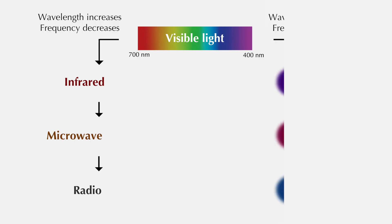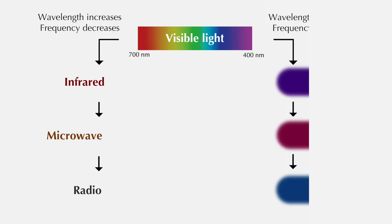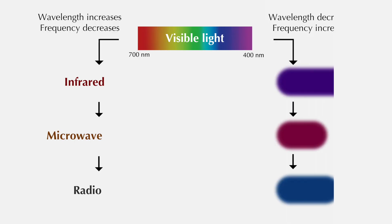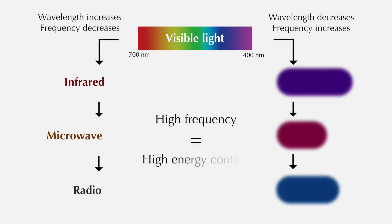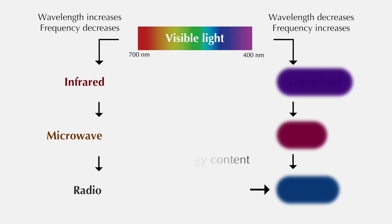We can now shift to the other half of the spectrum, where the frequency of radiation is higher than visible light. As a reminder, frequency is directly linked to energy content, so these forms of radiation will get progressively more energetic.